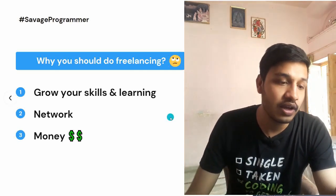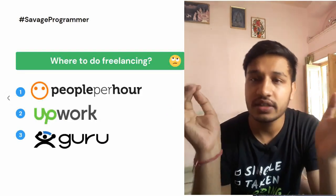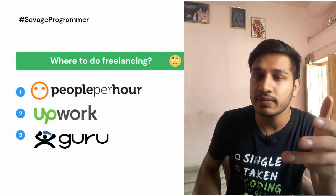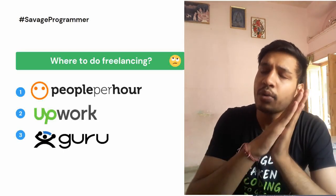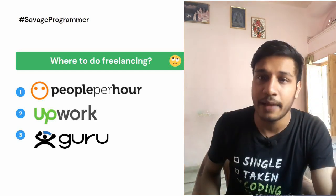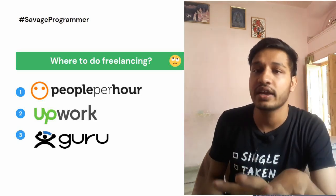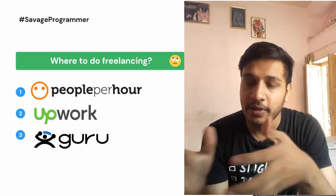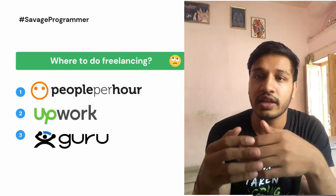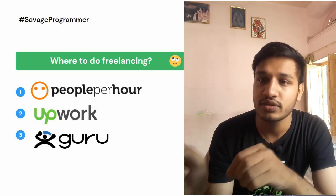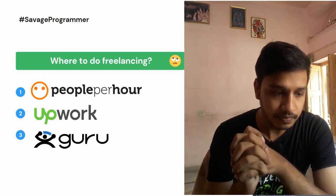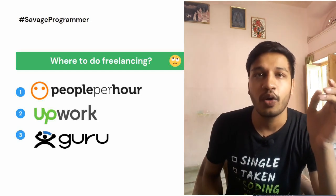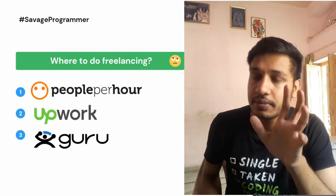Next is where to do freelancing. I can share my experience with you. My experience is with People Per Hour, Upwork, and Guru.com — these three platforms I have used. In addition, there are many platforms like Freelancer, Fiverr, Toptal, Talent Hubster, and Pepper Content. If you want me to do a comparison video on these platforms, please comment and tell me. We will be discussing People Per Hour in detail since that's where I have worked the most.